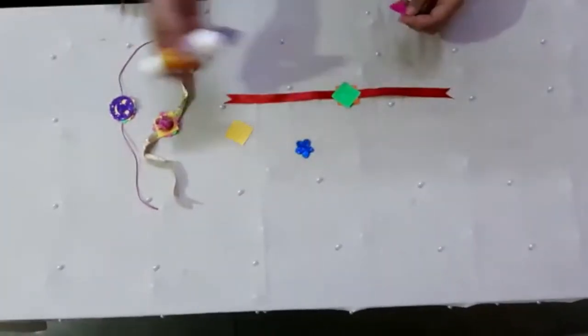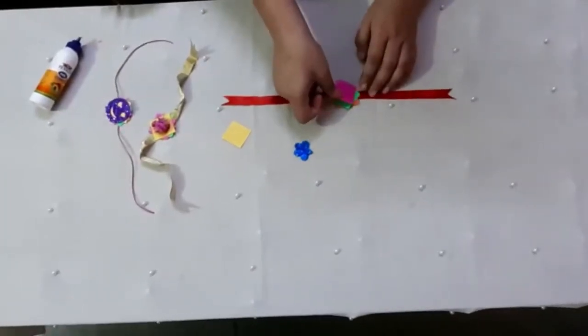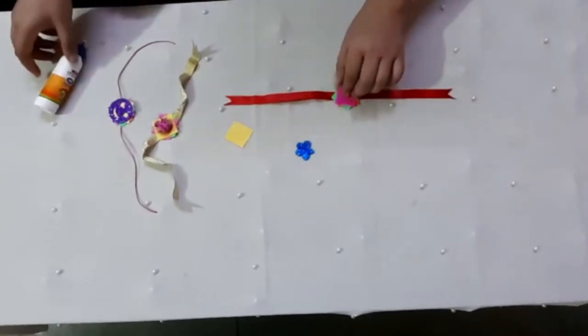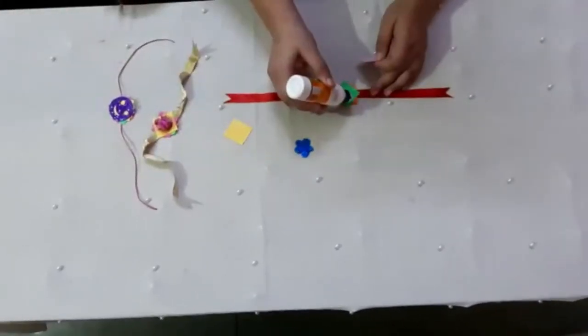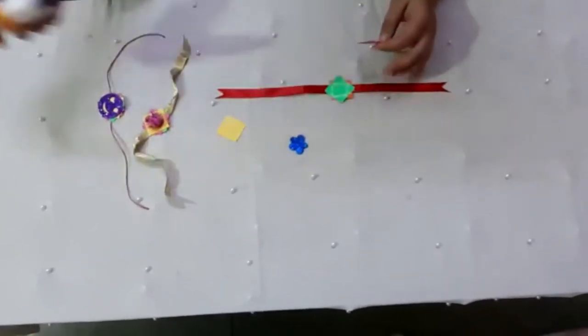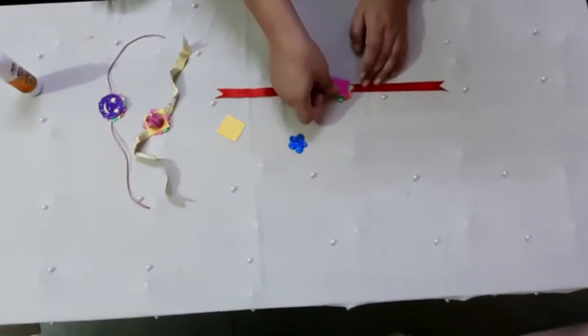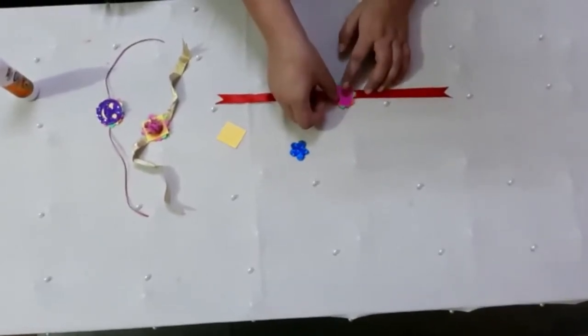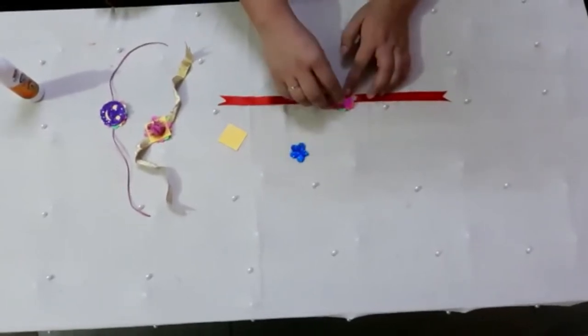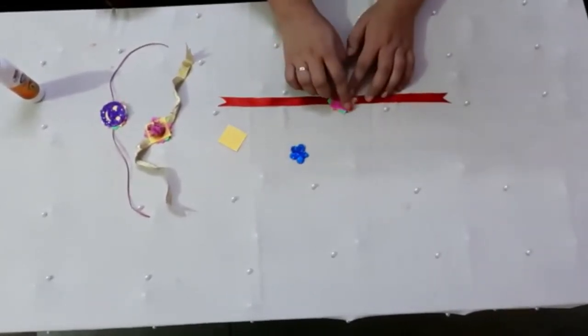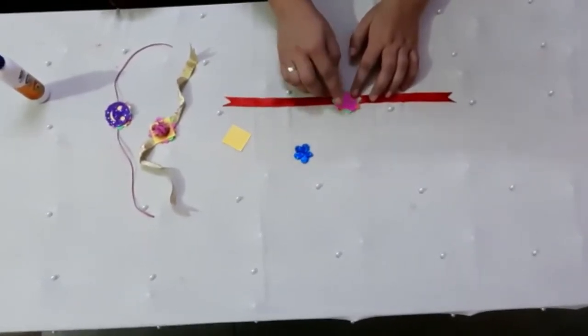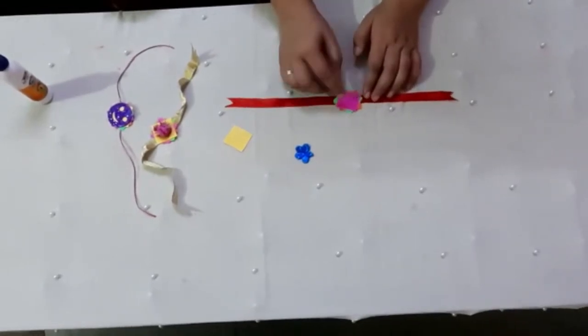Do it same with other squares also. Place it in the middle of each corner. Orange and green and in between pink. Place it in between of each corners.